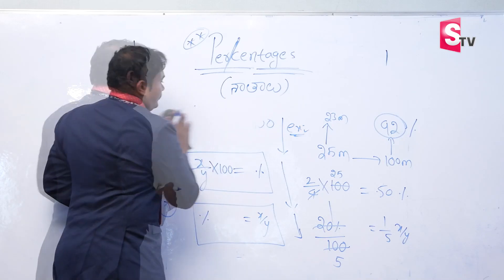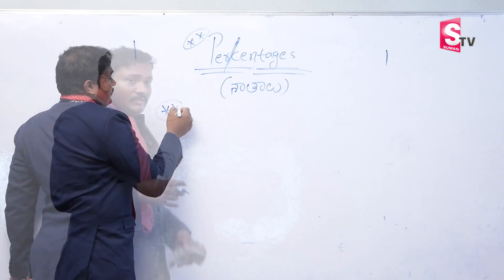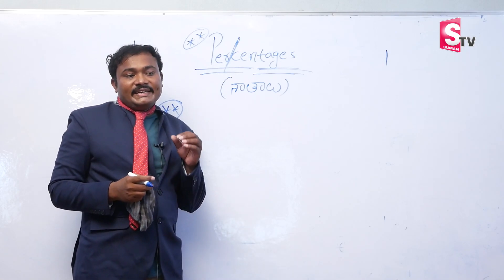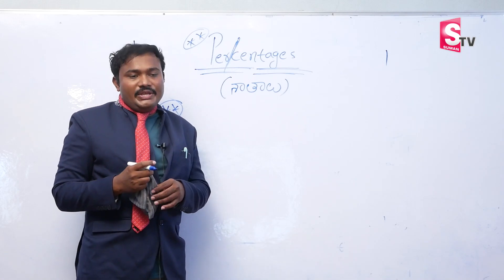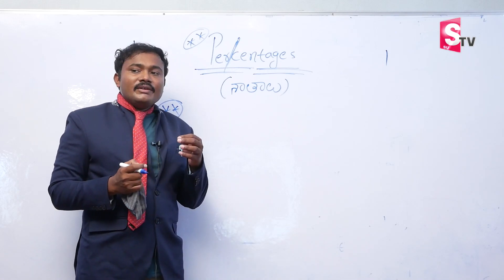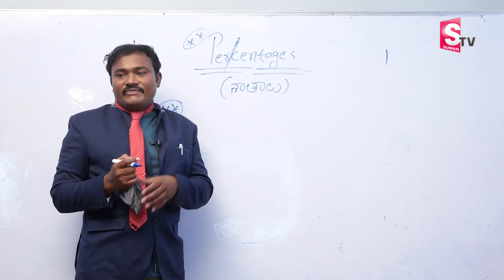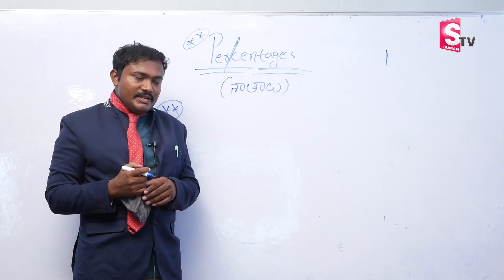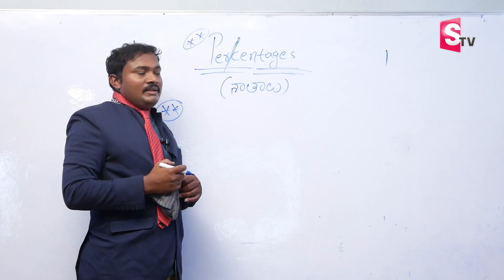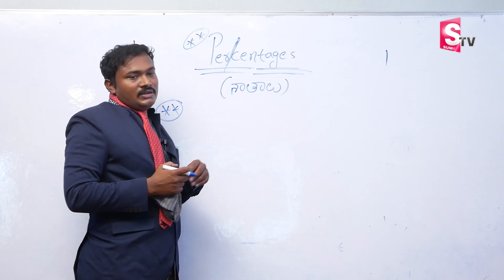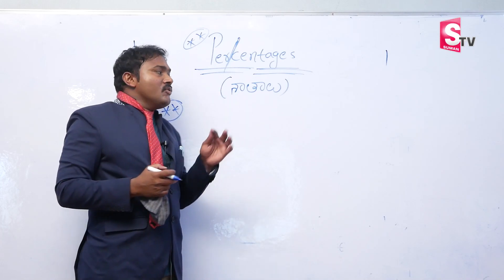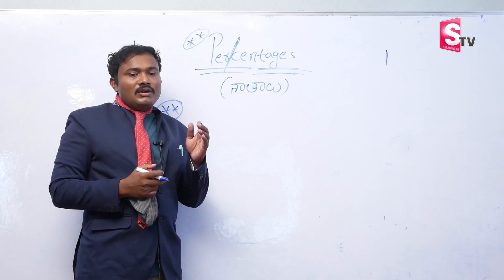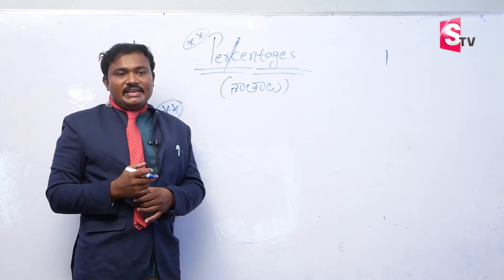Next, most important: how to take 10% of any value, and how to take 1% of any value. These are the most important shortcuts — not only for this chapter but automatically important for all chapters.